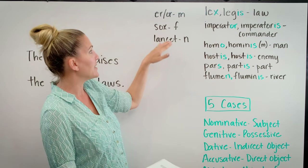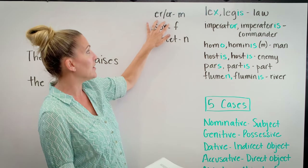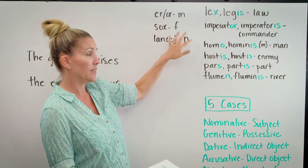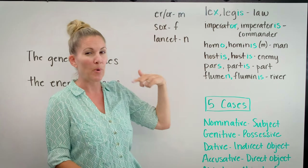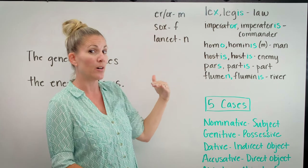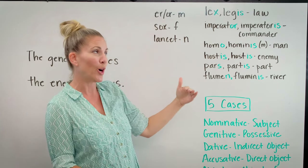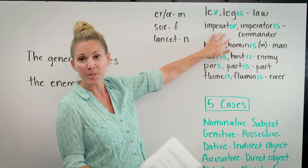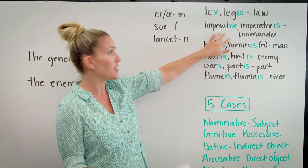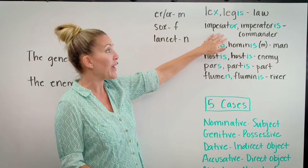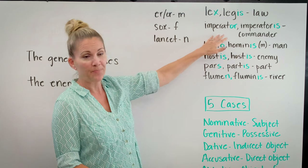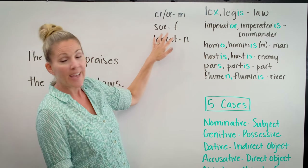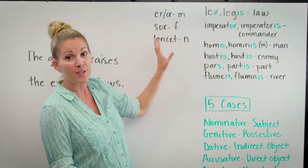To determine what gender a noun of the third declension is, you look at the ending of the nominative singular. If it ends in ER or OR, it's masculine — just remember the word 'error.' If it ends in an S, an O, or an X, it's feminine.